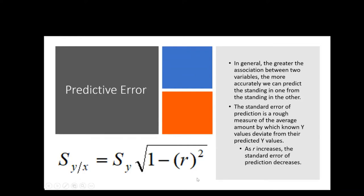Conceptually this can be hard, so I want to do it two ways — first mathematically, then visually. Let's start with a weak correlation. Say we're using the number of siblings to predict test scores, and that correlation is 0.2, which is very small. If I take 0.2 and square it, that gives R² = 0.04. So this value in the formula is 0.04.